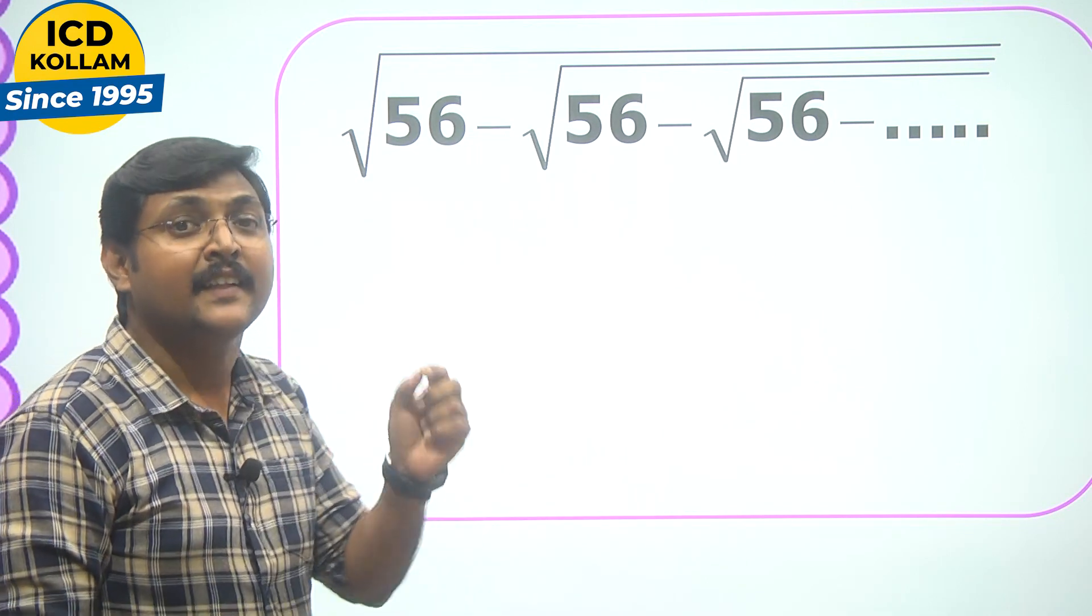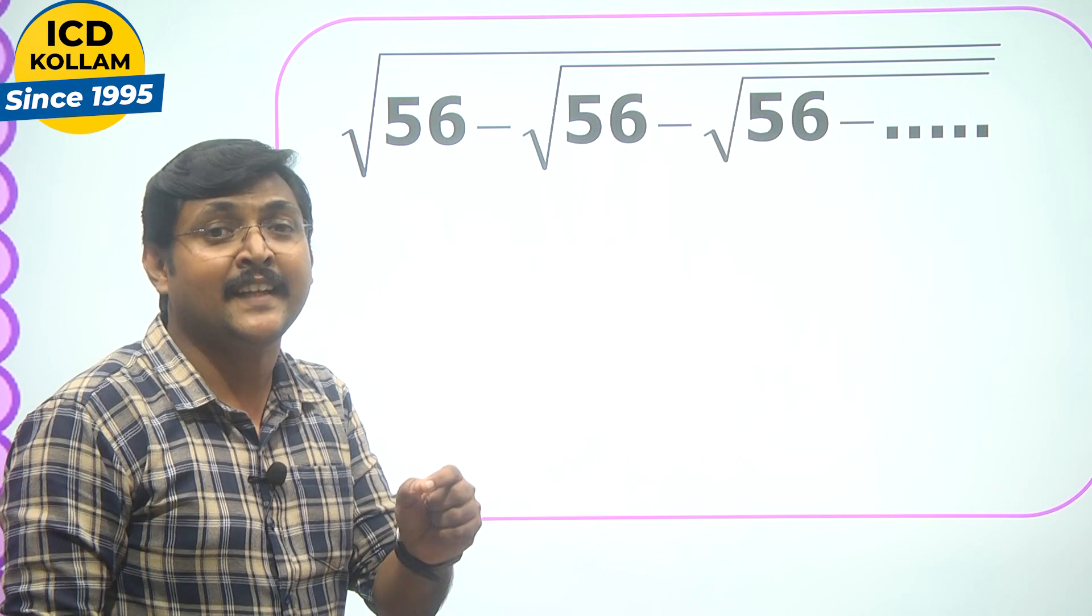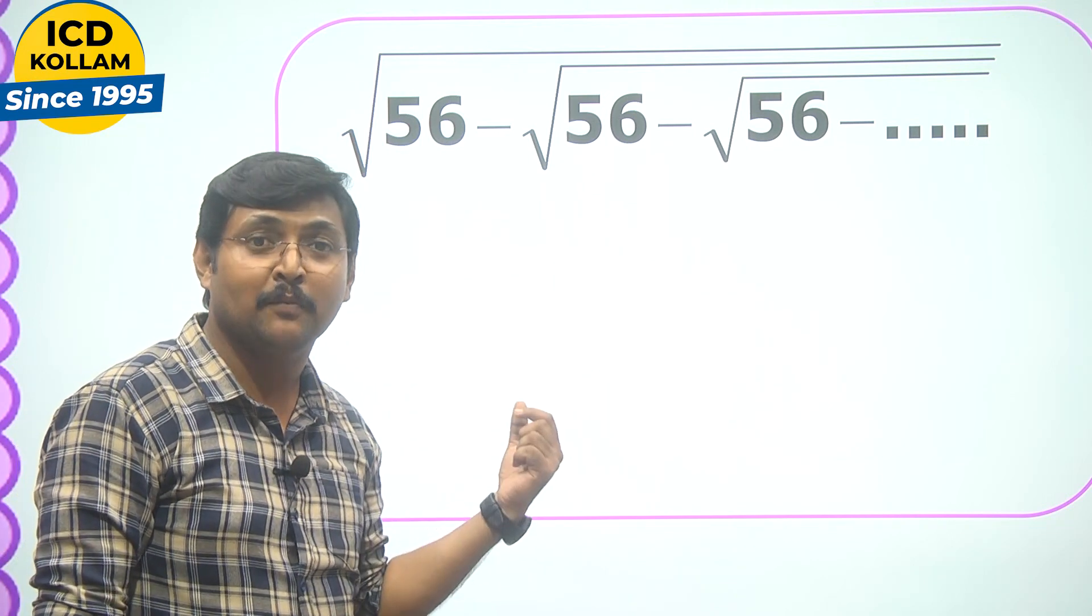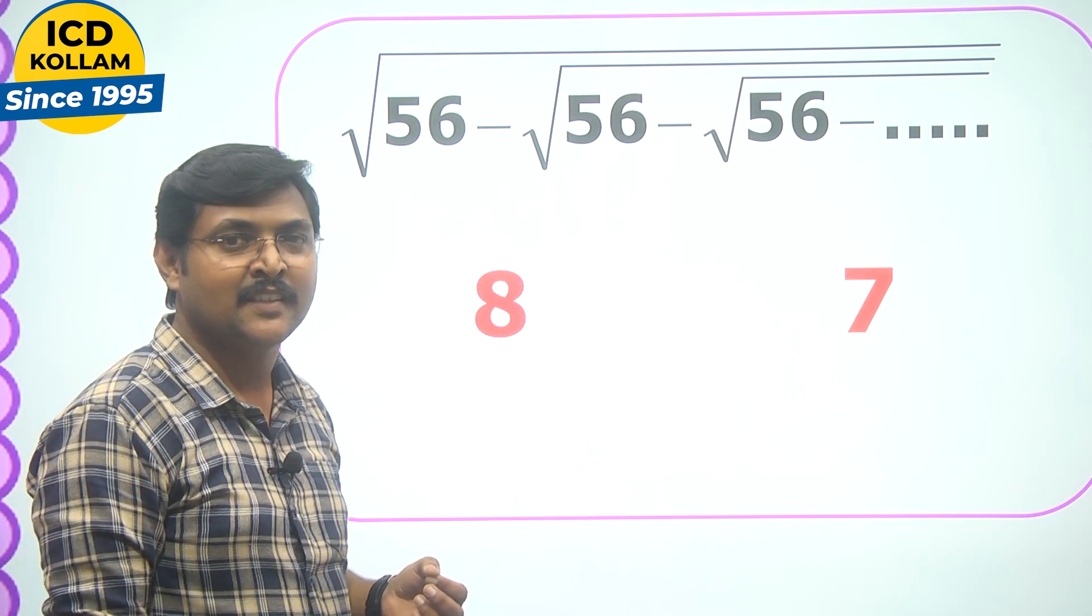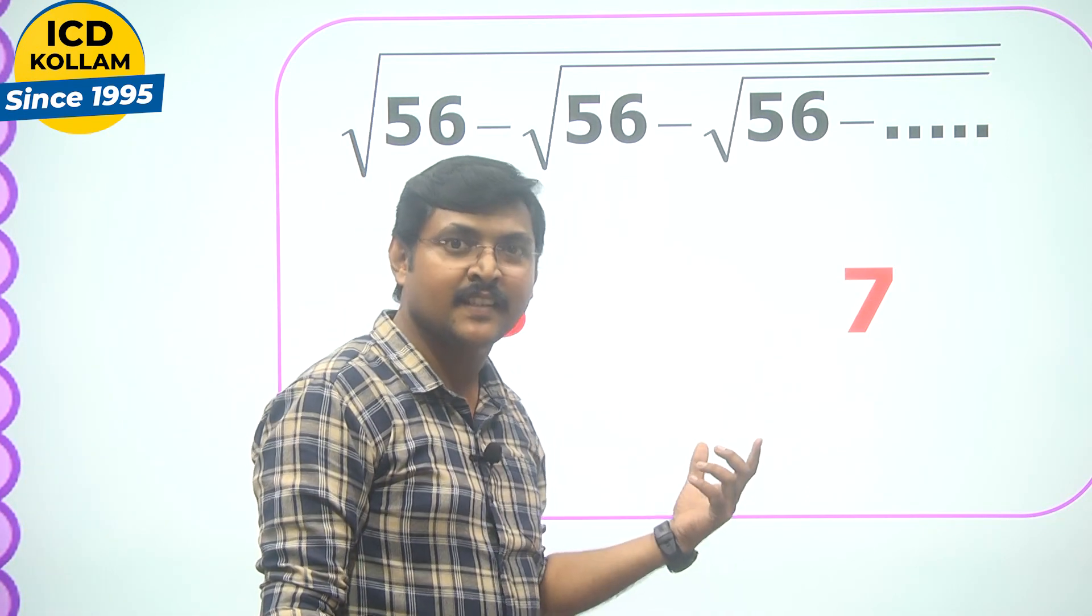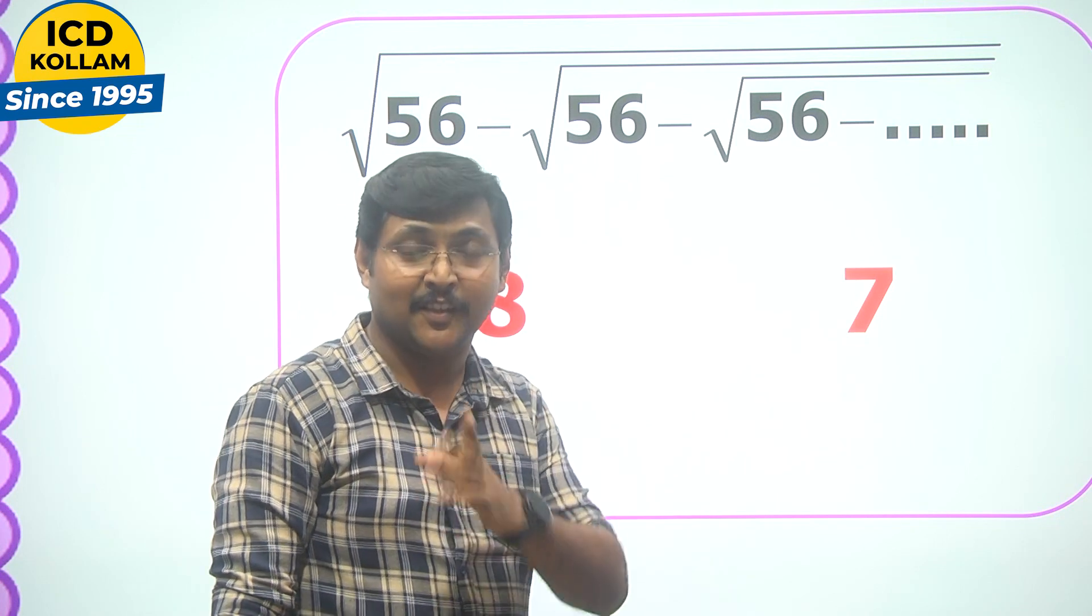First, we should find that two numbers in such a way that the product should be 56 and the difference of that two numbers should be 1. The two numbers are 8 and 7. Because 8 into 7 is 56 and the difference of 8 and 7 is 1.